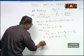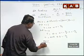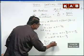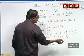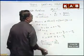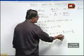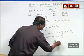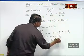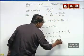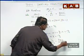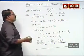Therefore the required partial fractions: 2x plus 5 by x minus 1 into x square plus x plus 1 equals to 7 by 3 into x minus 1 plus Bx plus C by x square plus x plus 1, where B equals to minus 7 by 3 and C equals to minus 8 by 3. That gives minus 7x plus 8 by 3 into x square plus x plus 1. These are the required partial fractions of the given proper fraction.